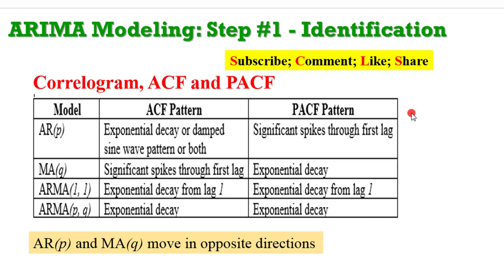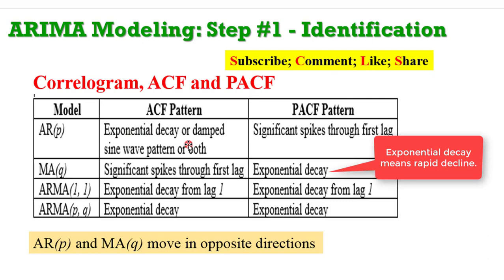You need to know the pattern of the ACF and the pattern of the PACF before you can decide whether the series will follow a strictly AR process, a strictly MA process, or a combination of both. For an AR process, the ACF pattern will show an exponential decay or a damped sine wave, and the PACF pattern will show significant spikes from the first lag — that indicates the series follows an AR process.